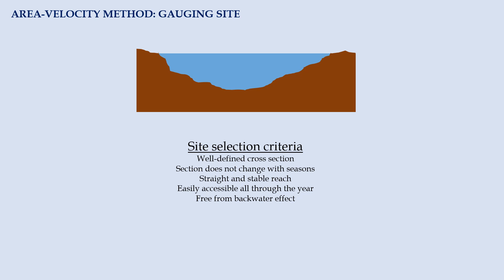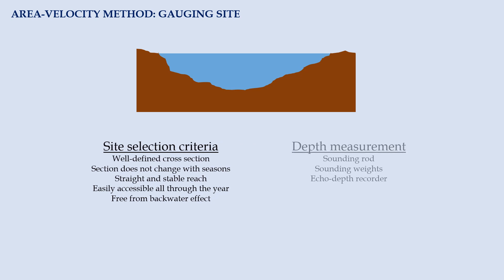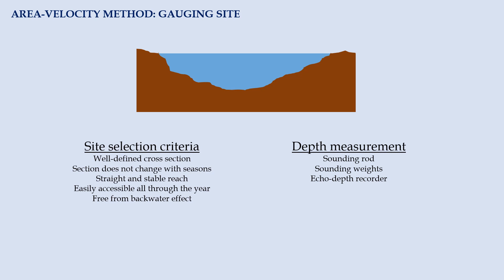The depth of the river is measured at various locations. The instrument for the measurement can be sounding rod, sounding weights, or even echo depth recorder. Once we get the cross section of gauging site, we need to divide it into several subsections by verticals. We use different points to take the average velocity of flow based on the depth of each subsection.